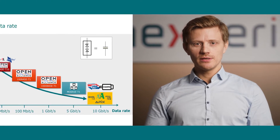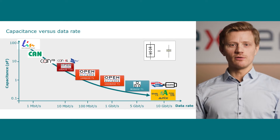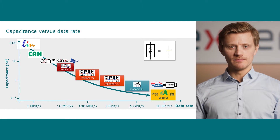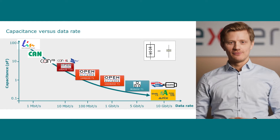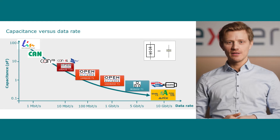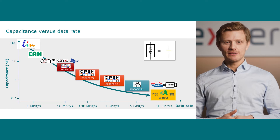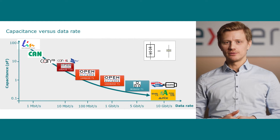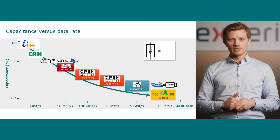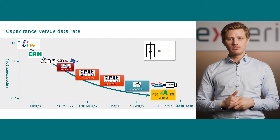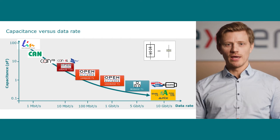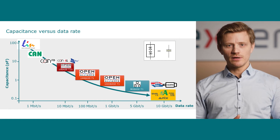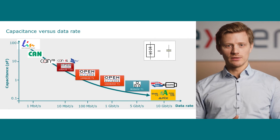The bigger the data rate, the smaller the device capacitance of the ESD protection device should be. For example, in LIN interfaces with data rates of 20 kilobits per second, a device capacitance of up to 100 pF is allowed. In automotive Ethernet applications, you should have no more than 3 pF, and in infotainment and service applications, you should choose an ESD device with less than 1 pF.